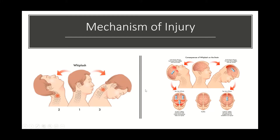The mechanism of injury for a whiplash injury involves hyperflexion and hyperextension type movements. If you are rear-ended in a car, most likely you're starting off in position one. Your head is going to whip backwards into position two, causing a hyperextension type injury. So there's going to be a stretching in the front of the spine and a compression in the back of the spine.